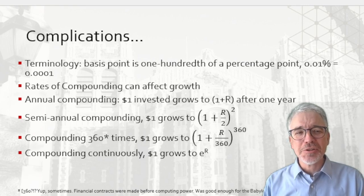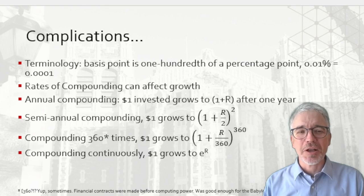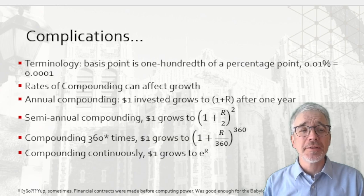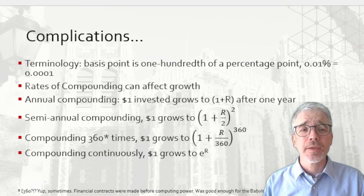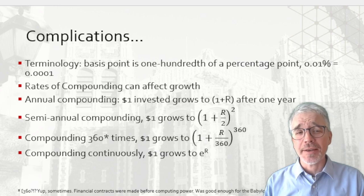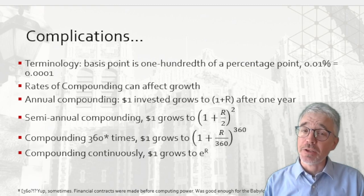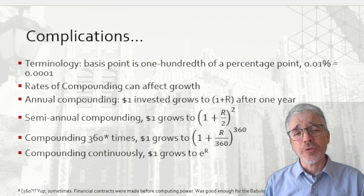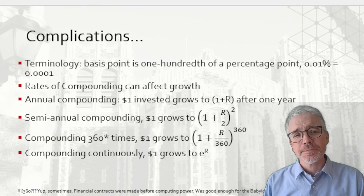Next complication, if you've ever read the fine print of a financial contract, like a credit card agreement, you might see something about the rate of compounding. Annual compounding is where an amount of money grows by (1 + R) after one year. But there could be semi-annual compounding where after six months, you get half the interest and another six months, they compound it again. Or they could do that each quarter. So after three months, you get one quarter of R. After another quarter, you get another, et cetera.